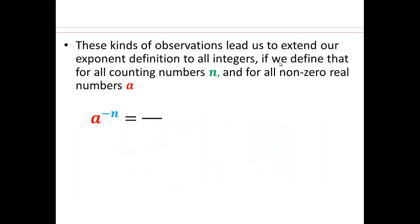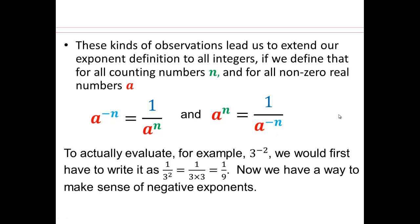So negative exponents: if your quantity is sitting in the numerator — remember, it's over 1 — you can take it to the denominator and make it a positive exponent. If it already is in the denominator, you can take it to the numerator and make it a positive exponent. These observations lead us to extend our exponent definition to all integers: if n is a counting number, a to the negative n is 1 over a to the n, and a to the positive n is 1 over a to the negative n. For example, 3 to the negative second power equals 1 over 3 to the second, which is 1 over 9.